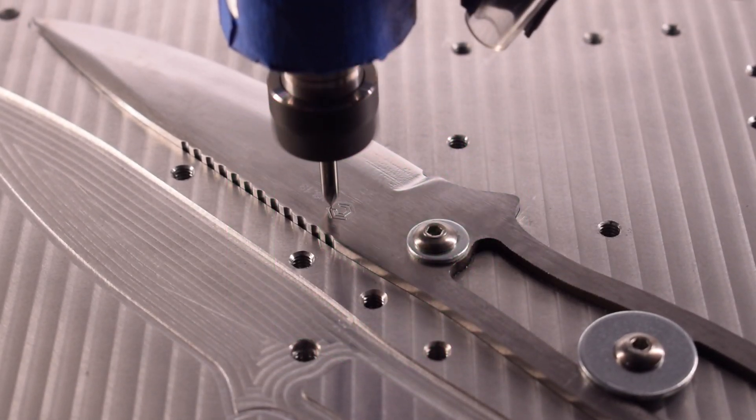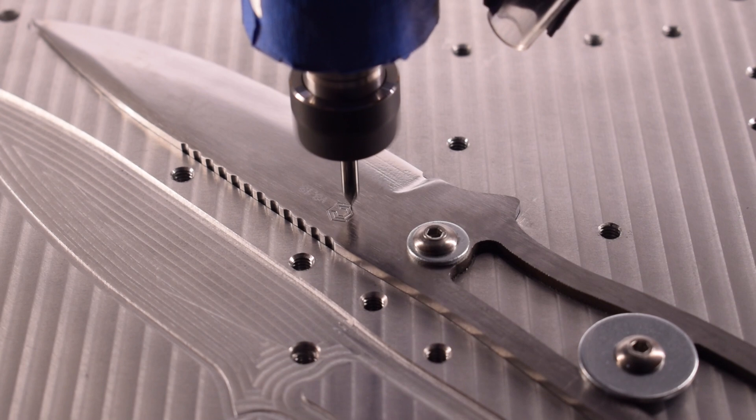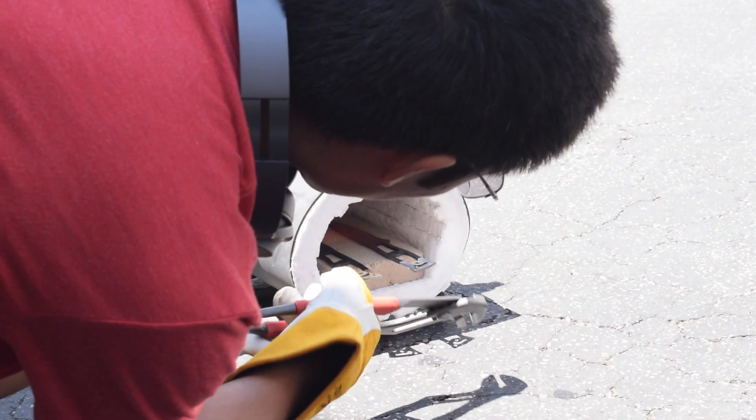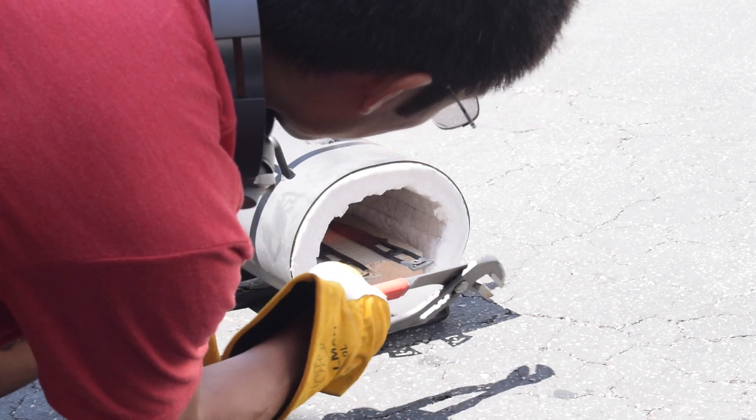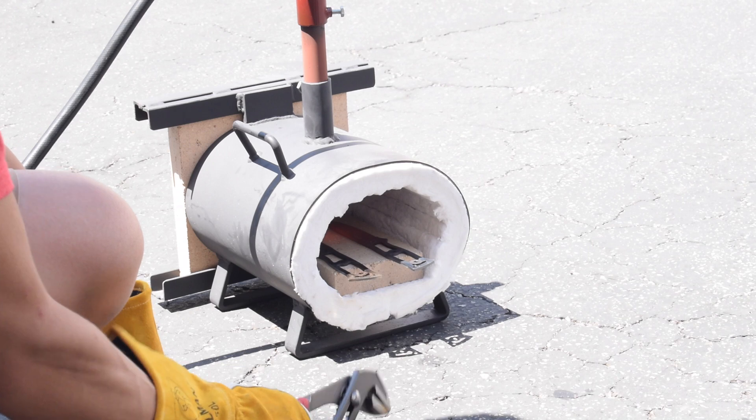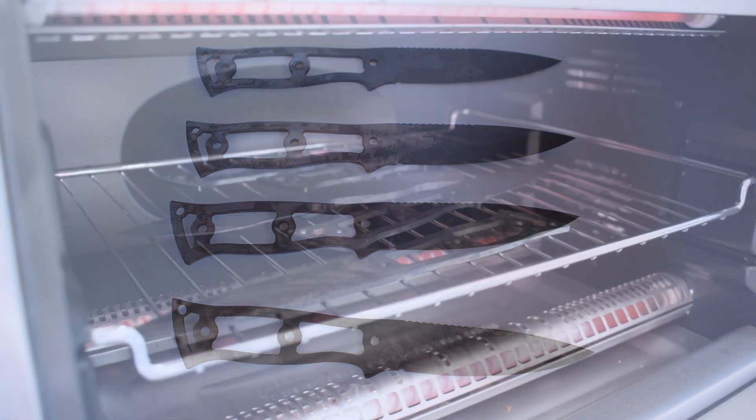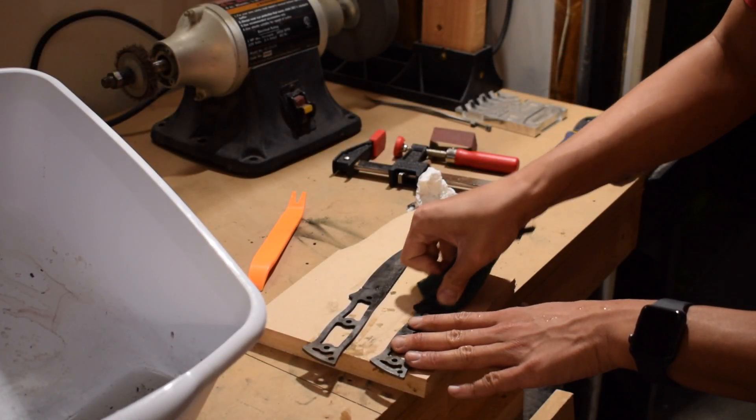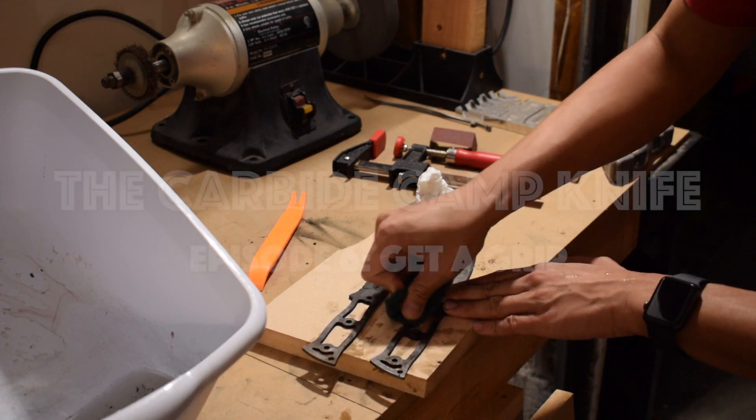Previously on the carbide camp knife series, a last minute decision to engrave our blades gave them distinctive identification. Then it was off to the forge where we heat treated the blades by bringing them to a cherry red glow. A quick quench in canola oil locked the steel into a hardened crystalline state, and two tempering cycles in the oven reduced the brittleness. Now we turn our attention away from the blades to work on scales for the carbide camp knife.